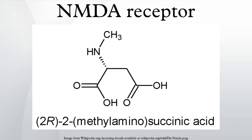GluN2: while a single NR2 subunit is found in invertebrate organisms, four distinct isoforms of the NR2 subunit are expressed in vertebrates, referred to as NR2A through NR2D, coded by GRIN2A, GRIN2B, GRIN2C, and GRIN2D. Strong evidence shows that the genes coding the NR2 subunits in vertebrates have undergone at least two rounds of gene duplication. They contain the binding site for the neurotransmitter glutamate. More importantly, each NR2 subunit has a different intracellular C-terminal domain that can interact with different sets of signaling molecules.